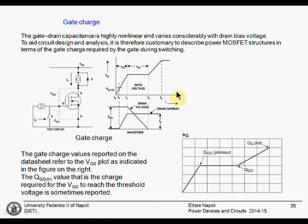You can integrate this voltage waveform to obtain the charge. This region is the gate-to-source charge QGS. This region corresponds to the gate-to-drain capacitance charge. This is the remaining portion of the total gate charge. There is also the gate threshold voltage charge — the charge needed just to reach the threshold. On the datasheets you find the total gate charge QG, which is the charge needed to switch the device on and off under typical conditions.